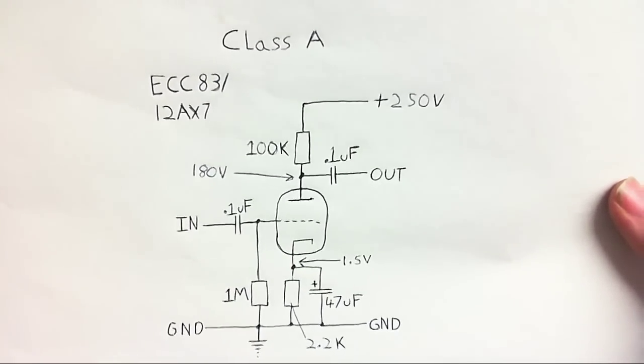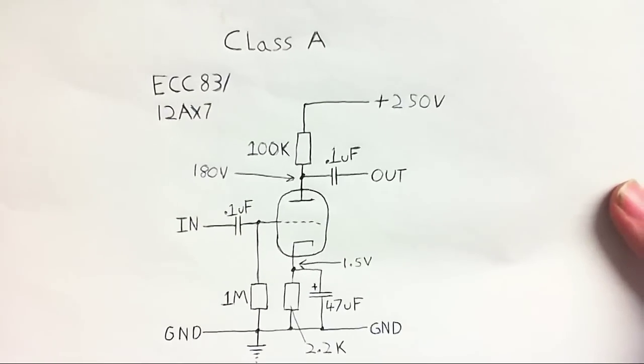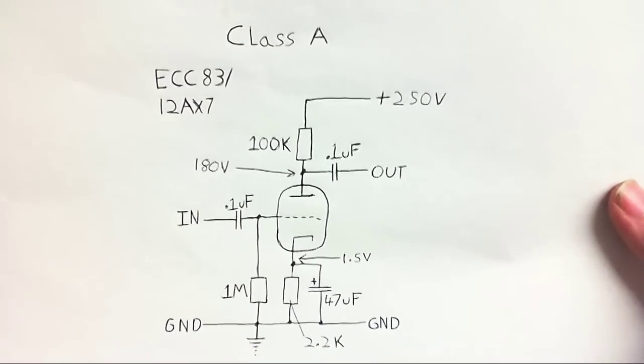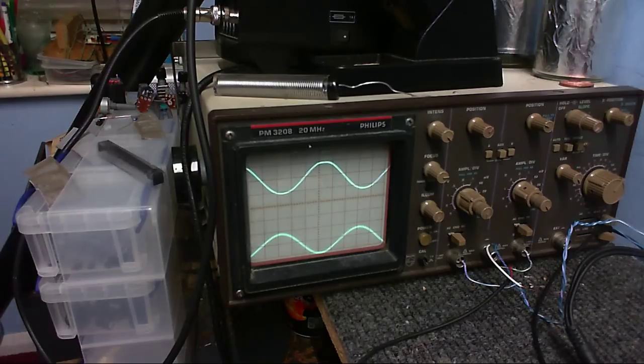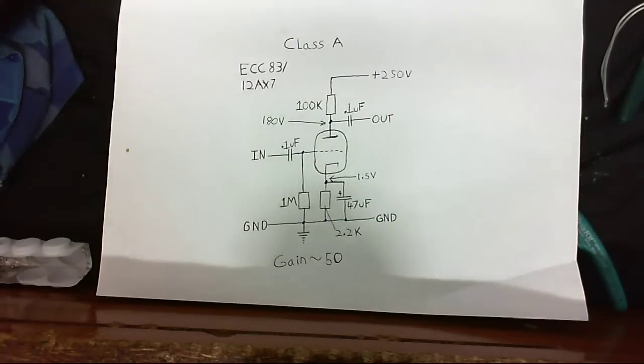So I had an idea. What about I compare this with a typical class A tube preamp circuit, just using one side of the tube. And here it is. This is the result on the scope. Same input voltage. And we're getting about one volt peak to peak out, which means we have a gain of about 50.